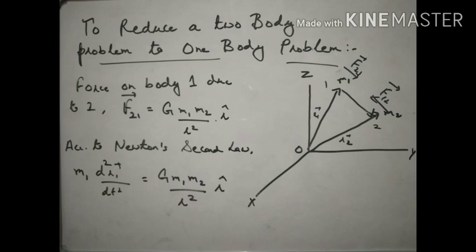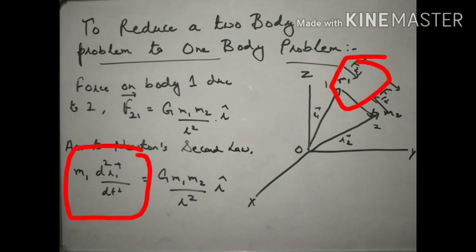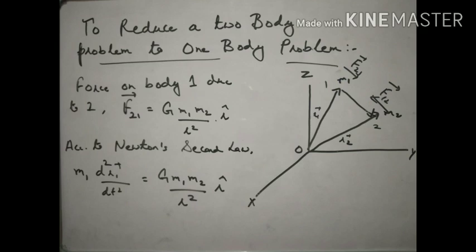Here we are talking about the first body, so mass will be m1 and the position vector from the origin is r1. So m1 into acceleration is d²r1/dt². Equating both forces: m1·d²r1/dt² = G·m1·m2/r²·r-cap.